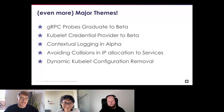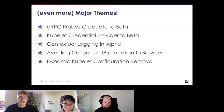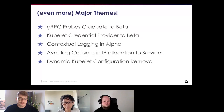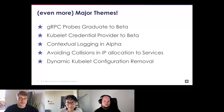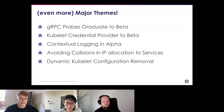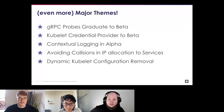gRPC probes are a major addition. Liveness and readiness probes have long been a feature in Kubernetes, but they previously required HTTP probes. If your application didn't ship an HTTP server and primarily communicated via gRPC, you had to bundle an entire HTTP server just for the probe. Now we support native gRPC probes — if you're working in a microservices application using gRPC without HTTP, this can really streamline deployment of internal services that need probes.